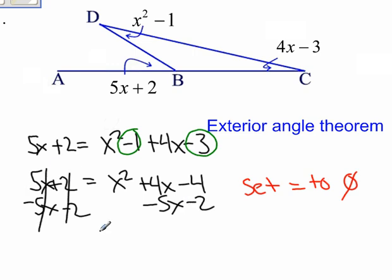The reason I'm moving everything to this side is because I want to set it equal to zero, but I also want to keep the x squared positive. So I'm going to get 0 equals x squared minus x minus 6.